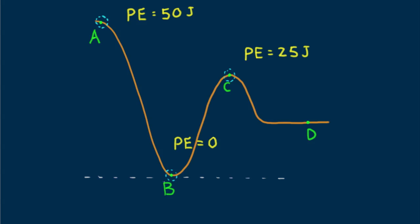And suppose its potential energy at C is 25 joules. And let's suppose at point D potential energy is 10 joules.